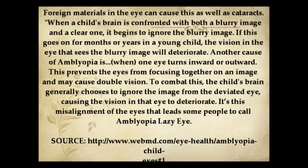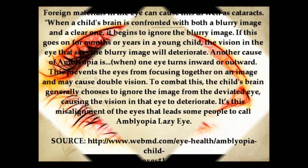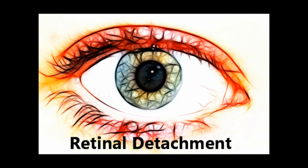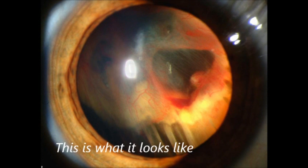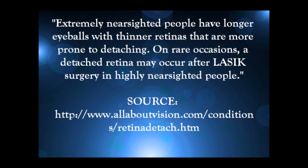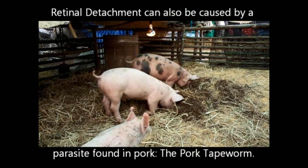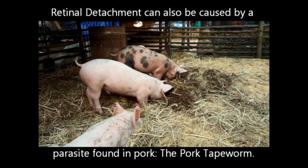Next is retinal detachment. This happens when the retina detaches from its normal position in the eye. This can occur because of diabetes, tissue damage, scar damage, or even because of LASIK surgery. This can lead to blindness, so it's pretty serious. People who are extremely nearsighted have a greater chance of experiencing retinal detachment. In addition, retinal detachment can also occur because of a parasite — specifically the pork tapeworm, also called Taenia solium, which you get from eating undercooked pork. They can cause cysts in your tissues as well as in areas like the eyes or the brain, leading to blurred vision or retinal detachment.